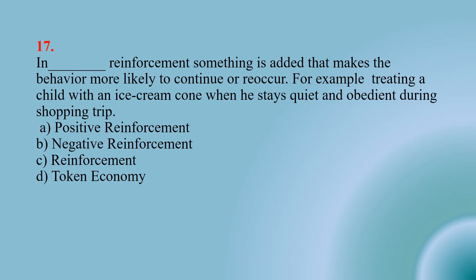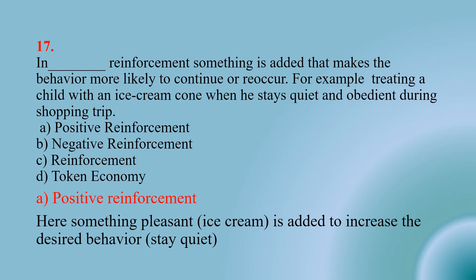Number seventeen: In this reinforcement, something is added that makes the behavior more likely to continue or reoccur. For example, treating a child with an ice cream cone when he stays quiet and obedient during a shopping trip — Option A: positive reinforcement; Option B: negative reinforcement; Option C: reinforcement; Option D: token economy. The right option is A — positive reinforcement. Something pleasant like ice cream is added to increase the desired behavior.